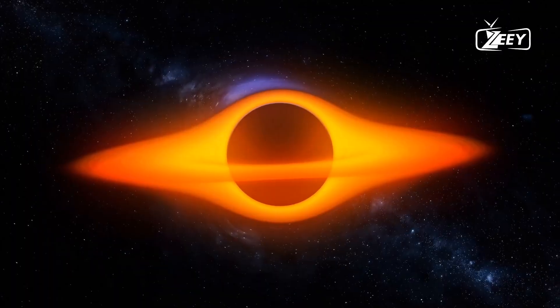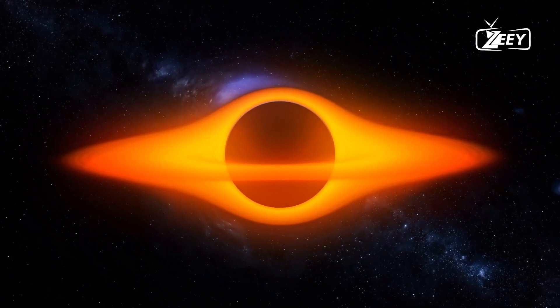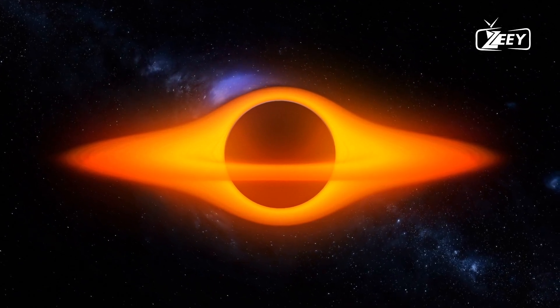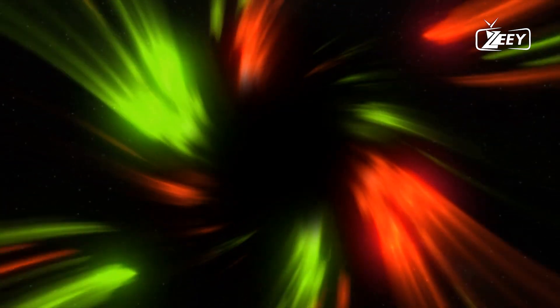It is hurtling toward Earth at a speed of 106 kilometers per second. But it is not just a supermassive black hole hurtling toward us, it is bringing a galaxy with it. Yes, that is the Andromeda Galaxy, which is only 2.7 million light-years away from us.